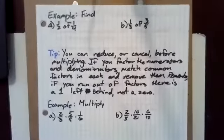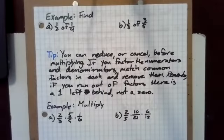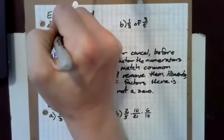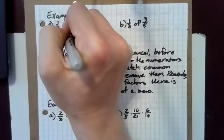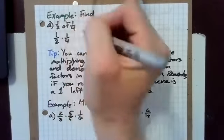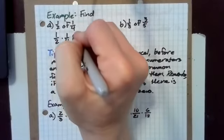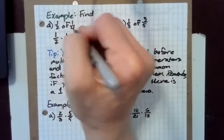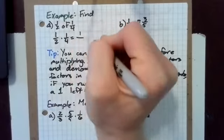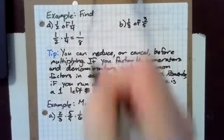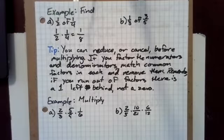Here's an example. One half of one fourth. We'll write that as one half times one fourth. We could use the x or the dot or parentheses. We multiply the numerators: one times one is one. We multiply the denominators: two times four is eight. One half times one fourth is one eighth.